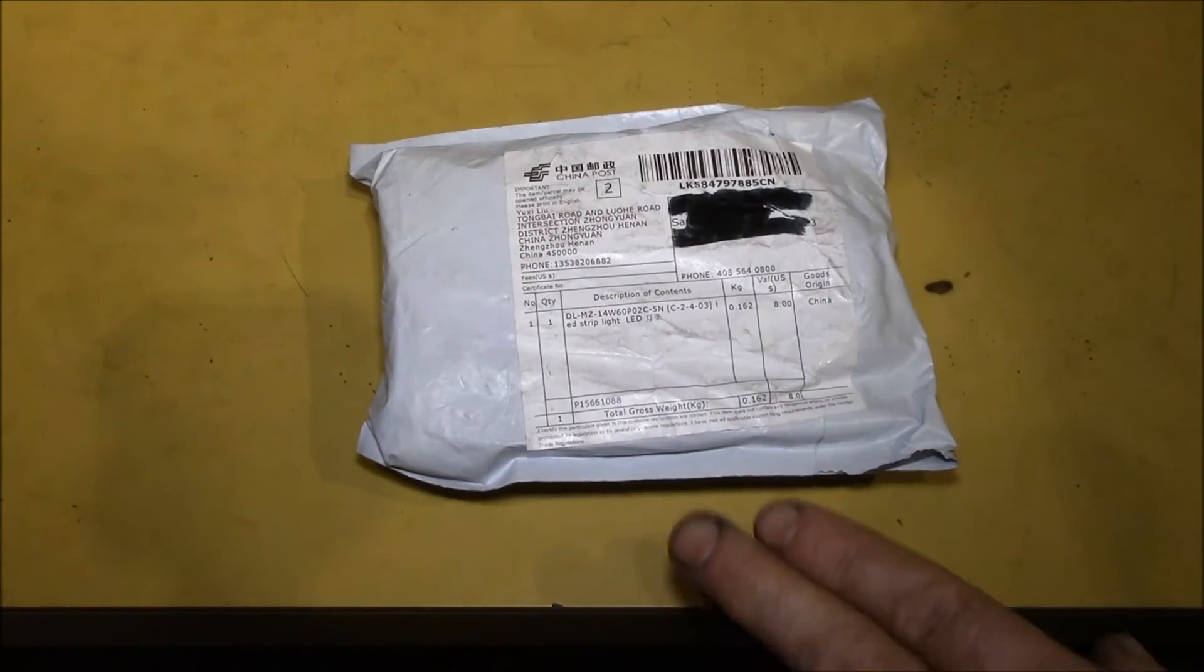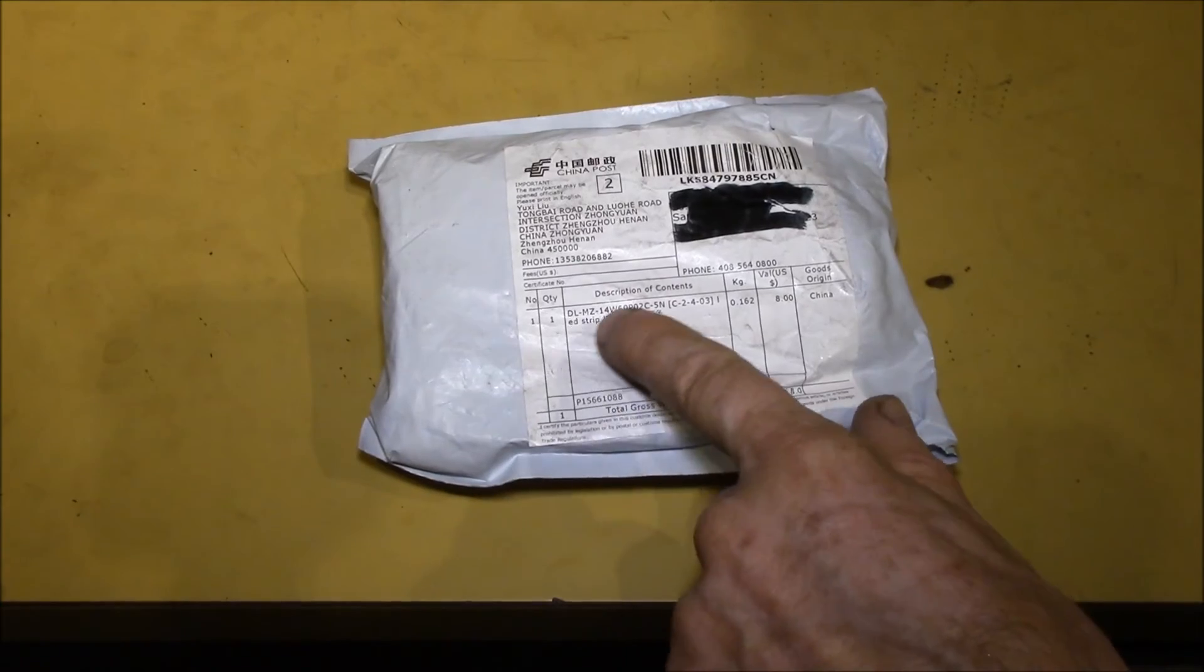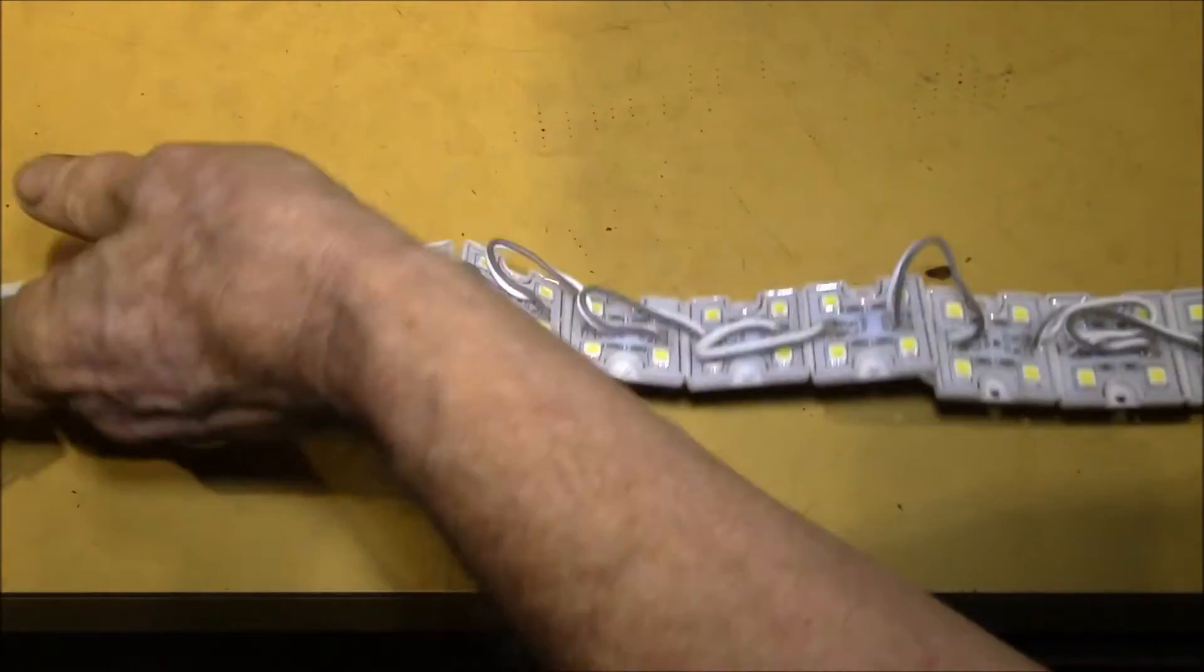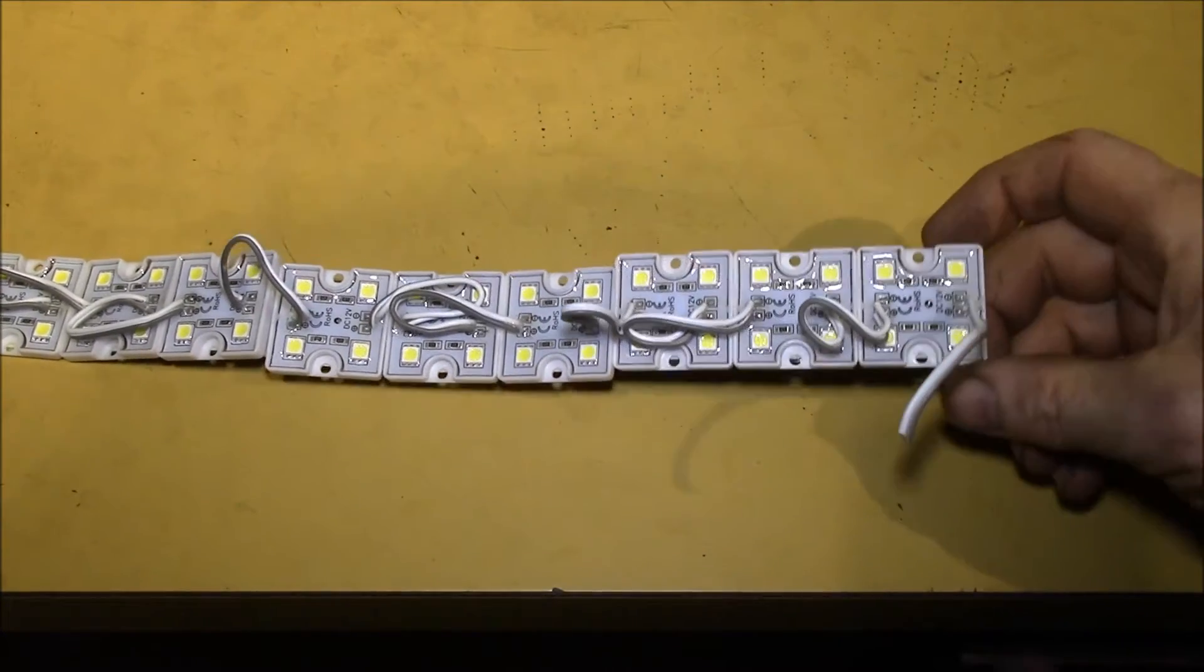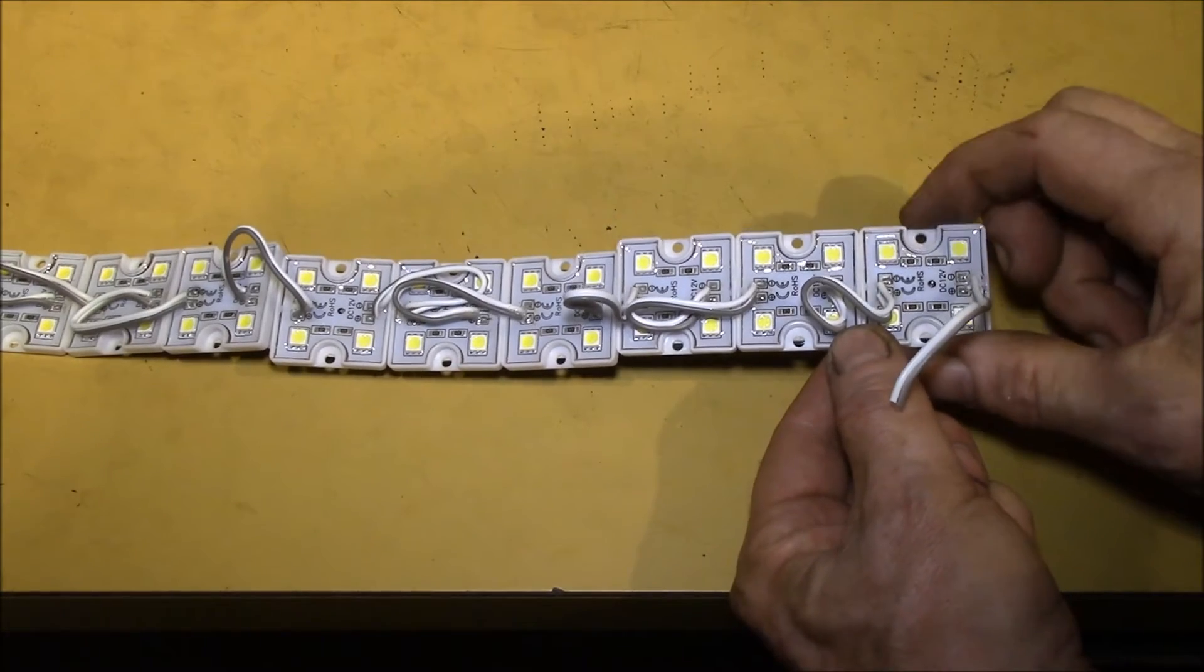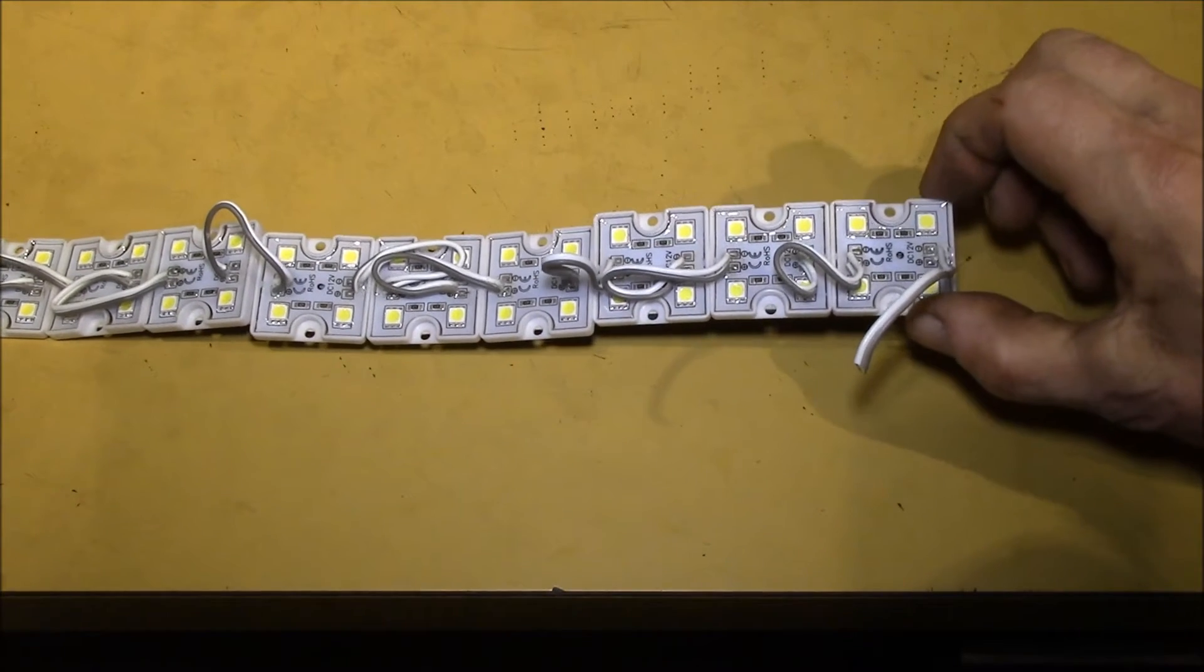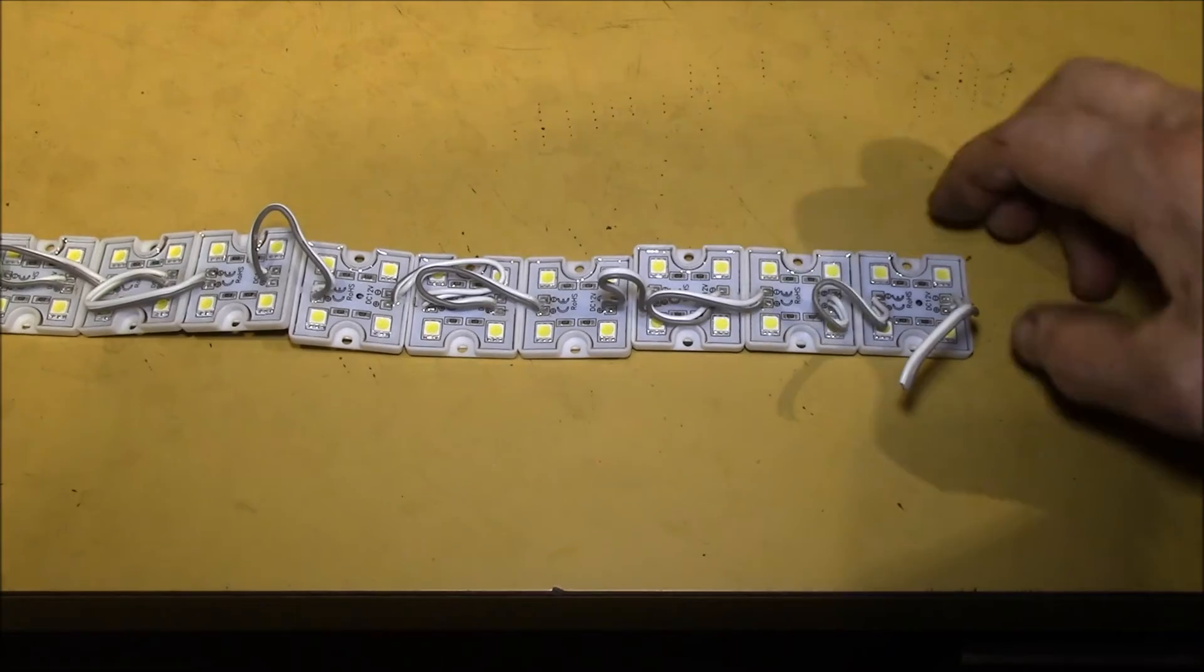The mailman just dropped off this package. It's strip light LED from China. This is a 4x4 array, and the size of these seems to be just a little narrower than the space around where the fluorescent tube used to sit in my work light.